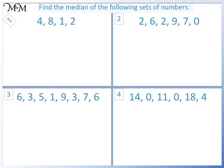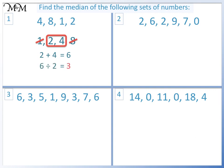Question 1. First, we'll put the numbers in order. Next, we'll cross out the numbers on each side until we reach the middle. To find the median, we add 2 and 4, which equals 6. 6 divided by 2 equals 3. 3 is halfway between 2 and 4. The median is 3.